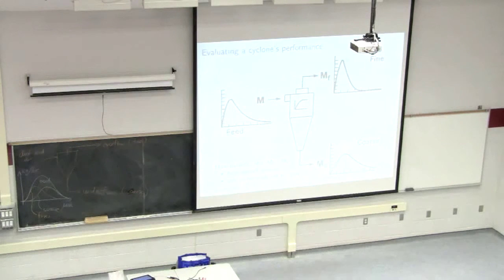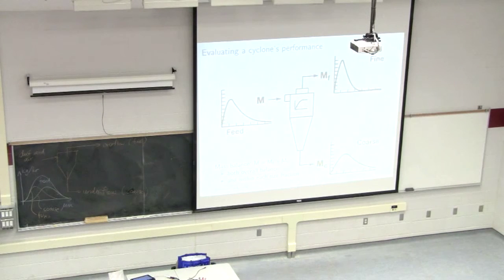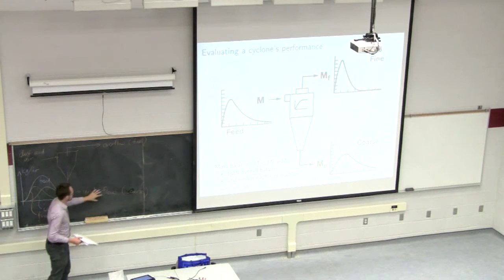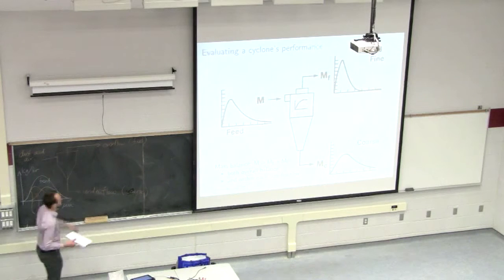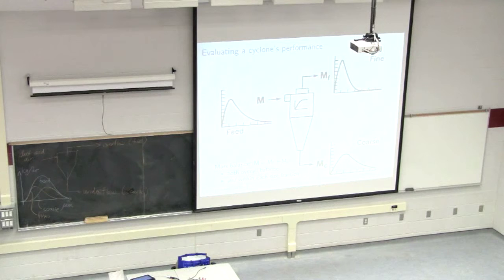Where I'm going with this in today's class is: imagine a case where you really want to separate everything — all the dust should be separated, so you've got a separation factor close to 100%. Ideally you would like your cyclone to bring all the solids to the underflow stream so that your overflow contains no solids. We'll see that's pretty much impossible with a single cyclone, but there are ways to combine cyclones in sequence to achieve that overall goal.